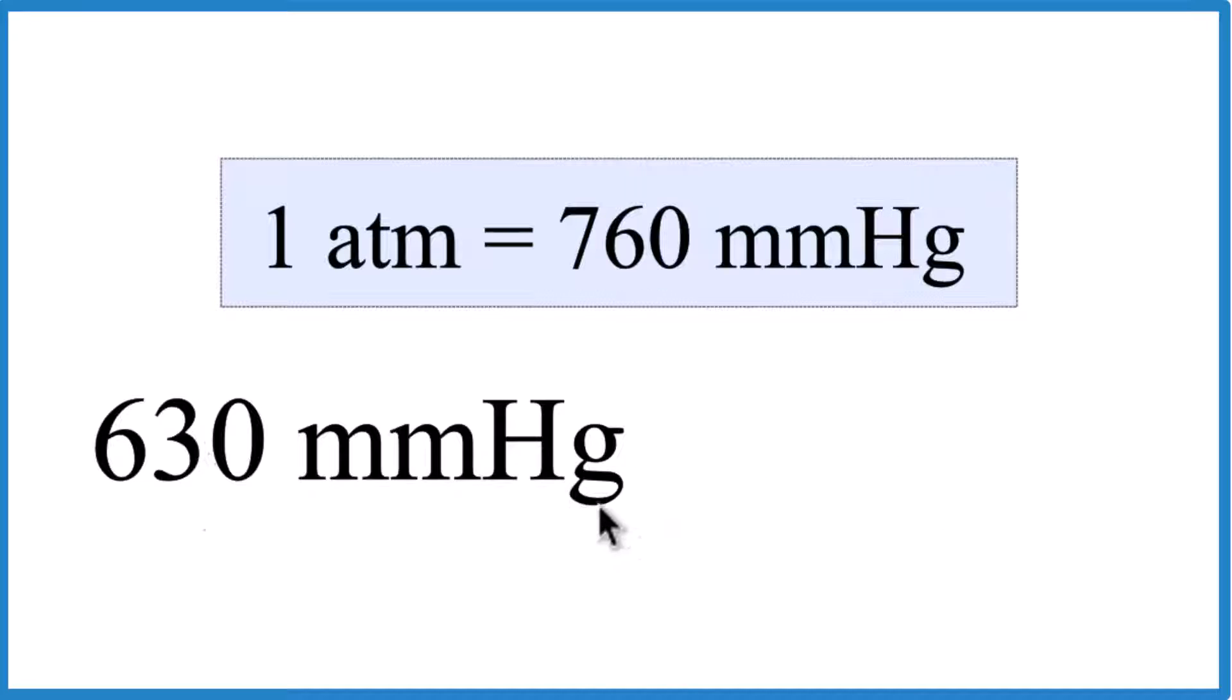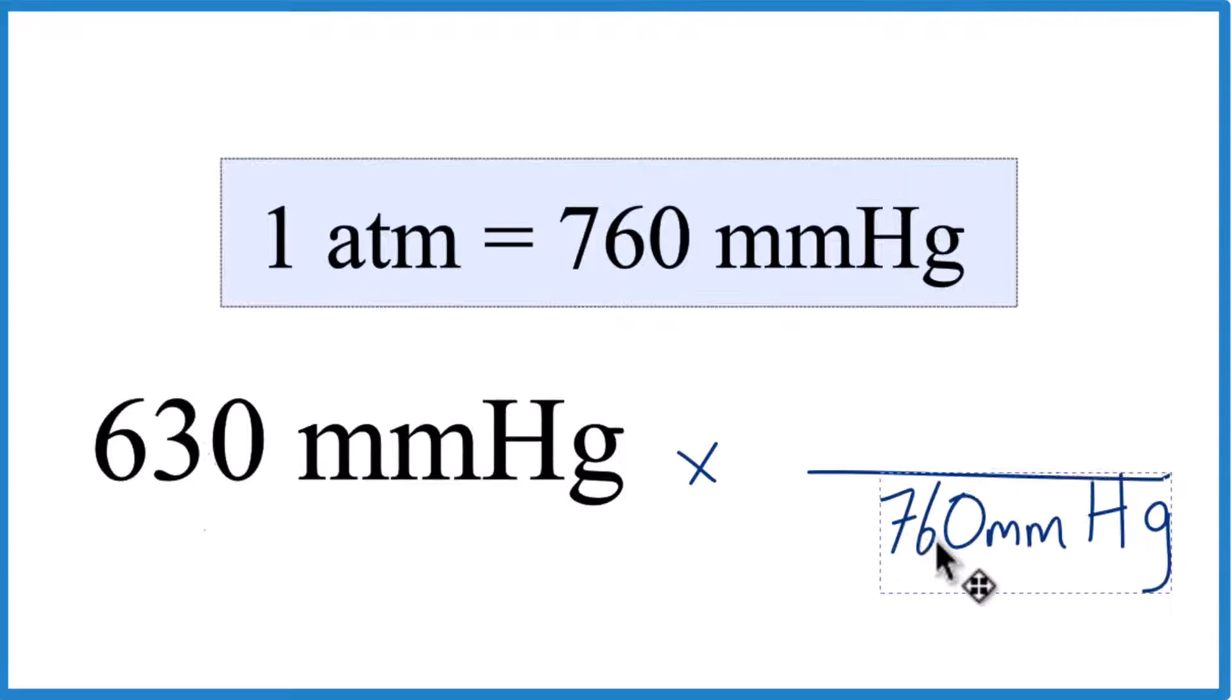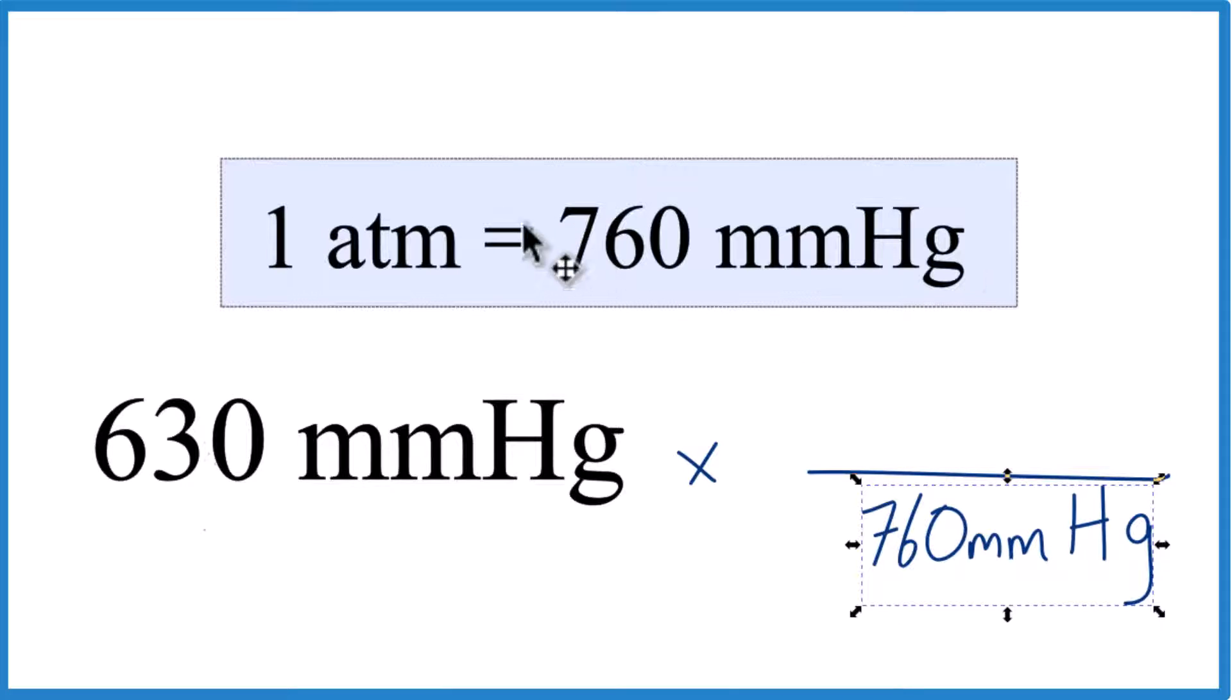So we take 630 millimeters of mercury times, and we want the millimeters of mercury to cancel out. So let's put the 760 here in the denominator, and then we want to end up with atmospheres. So one atmosphere, that'll go in the numerator.